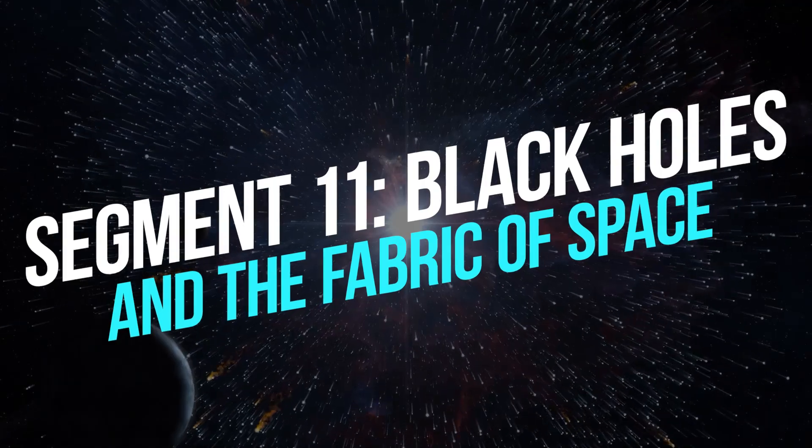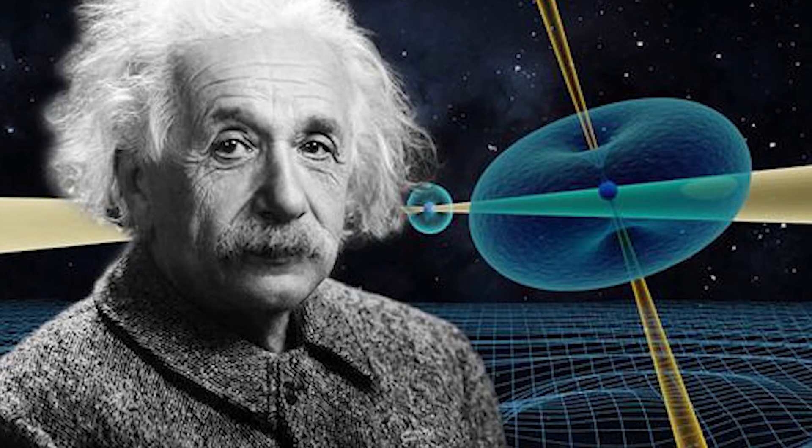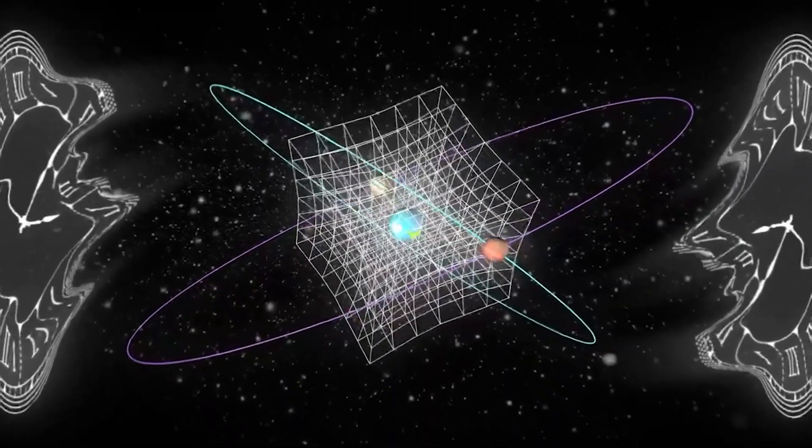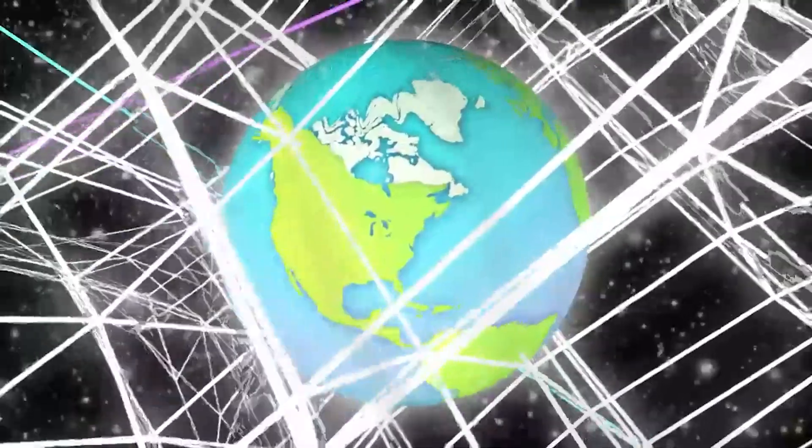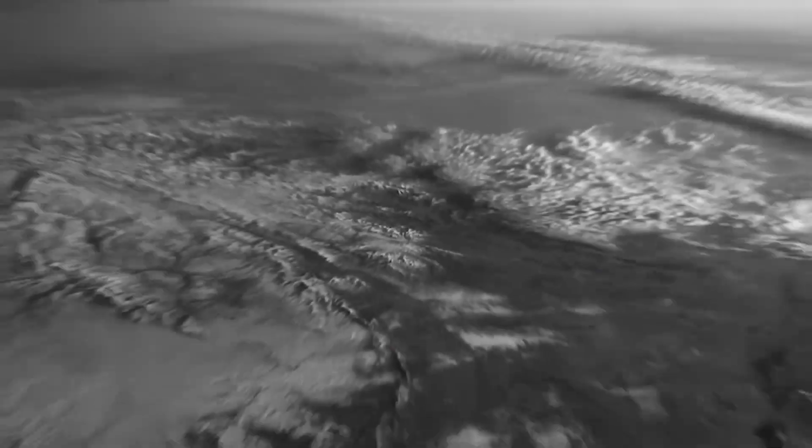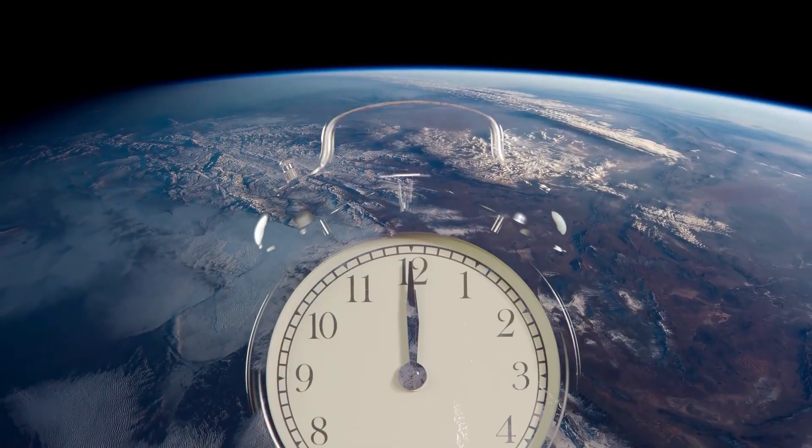Segment 11. Black Holes and the Fabric of Space. Einstein's theory of general relativity explains how massive objects like black holes warp the fabric of space, creating gravitational wells that dictate the motion of other celestial bodies. This interplay between mass and space-time curvature shapes the cosmos as we know it.